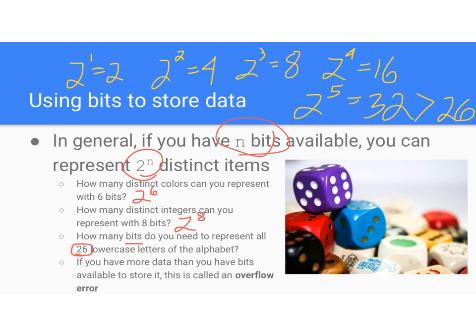There's more data you can represent with five bits than just 26 letters. But five bits is the minimum number needed to represent all 26 letters of the alphabet. Also — and this needs to make it into your notes — if you have more data than you have bits available, that's called an overflow error. We're going to do some practice problems this year where we'll look at overflow errors.